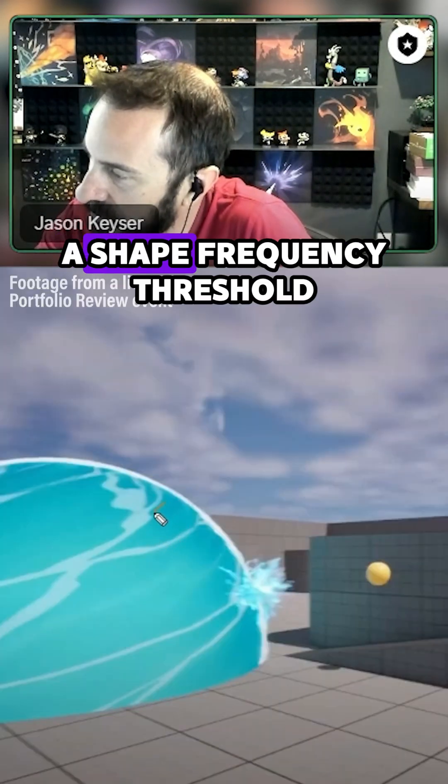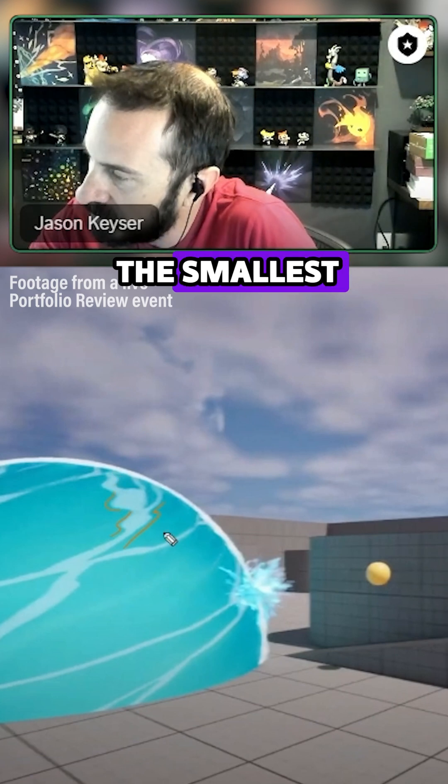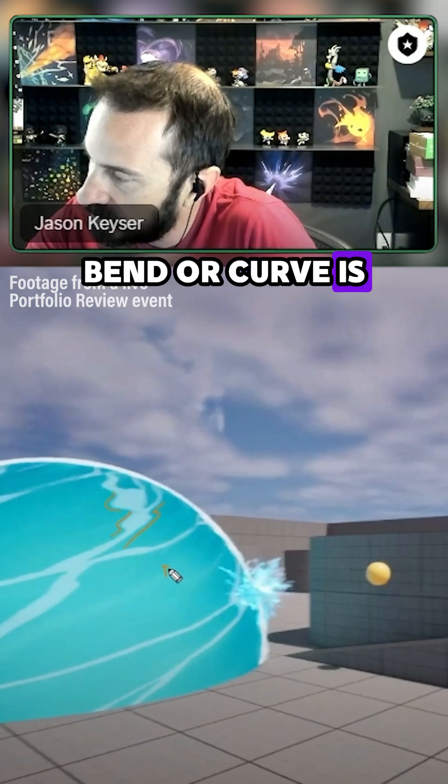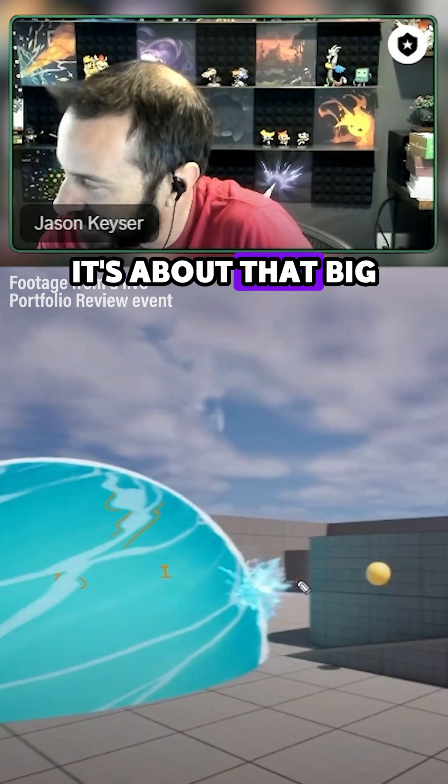So here we've got a shape frequency threshold that's probably something like this. The smallest bend or curve is roughly about this size. Here we've got a shape frequency threshold that's about that big.